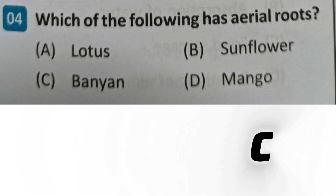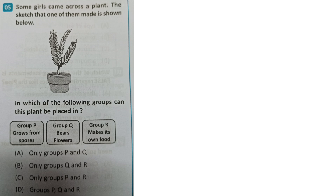Next question: Some girls came across a plant. The sketch that one of them made is shown below. In which of the following groups can this plant be placed? Options: only group P and Q, only group Q and R, only group P and R, only group P, Q and R. The correct answer is C - only group P and R.